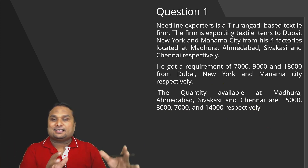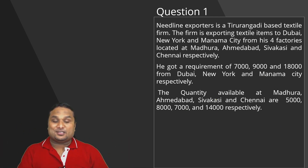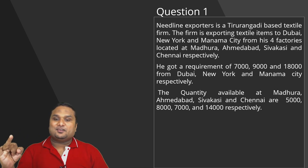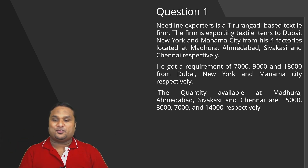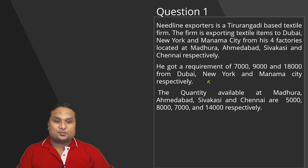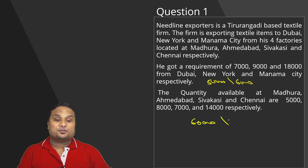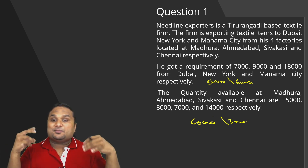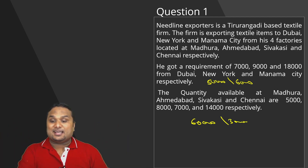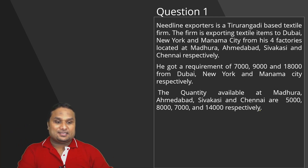All the questions in the initial stage have total demand equal to total supply and are minimization questions. Once we learn the Lowest Cost Entry method, Largest Cost Entry method, and become expert in the Modified Distribution method, I will teach you how to do an unbalanced transportation problem — where demand is 50,000 but supply is 60,000, or supply is only 30,000 against a demand of 60,000. For now, every question is a balanced transportation problem.